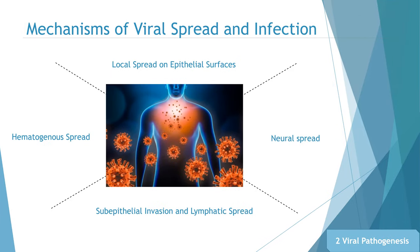Virus replication may be restricted to the body surface through which the virus enters, for example the skin or respiratory tract. Alternatively, the invading virus may breach the epithelial barrier and spread through the epithelial surfaces, blood, lymphatics, or nerves to cause a generalized infection or infection in a specific site.